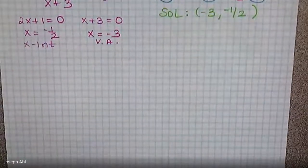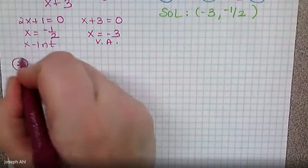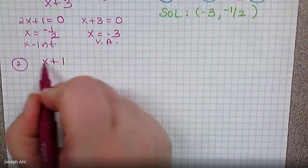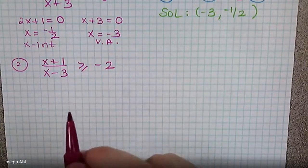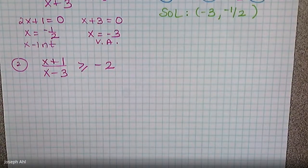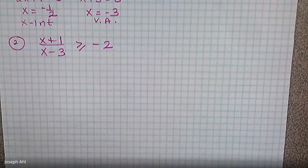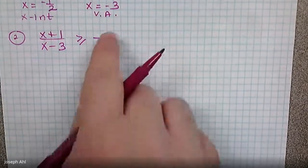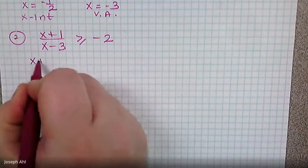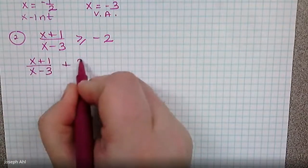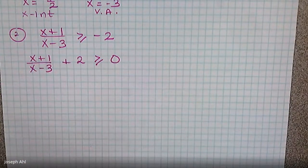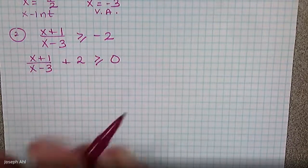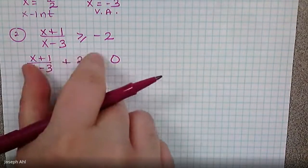For number two: x plus one over x minus three is greater than or equal to negative two. This one is not set to zero, so we start by moving the two to the side. We get x plus one over x minus three plus two on the left side, greater than or equal to zero. Now, we cannot determine x-intercepts and vertical asymptotes until this is one combined fraction.